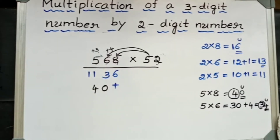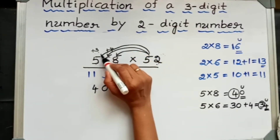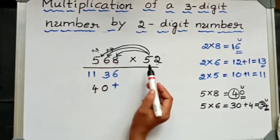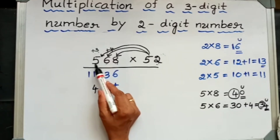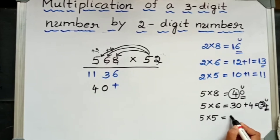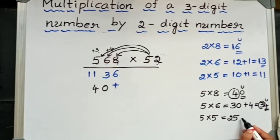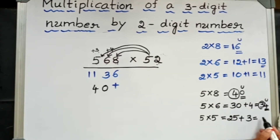Then 5 into 5. From this 5, I will multiply this 5. 5 × 5 is 25. Then this carryover plus 3. 25 plus 3 is 28.